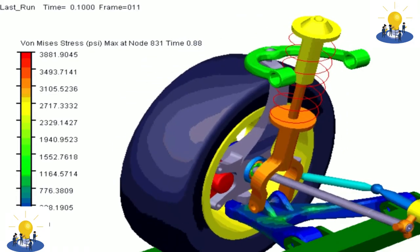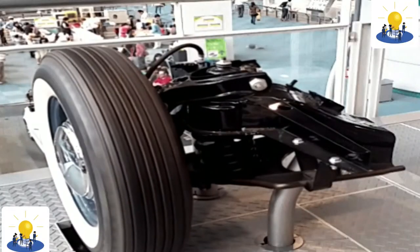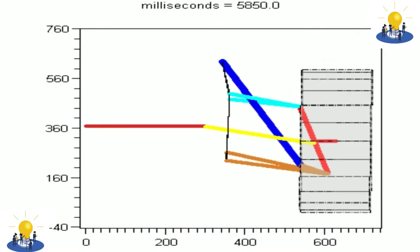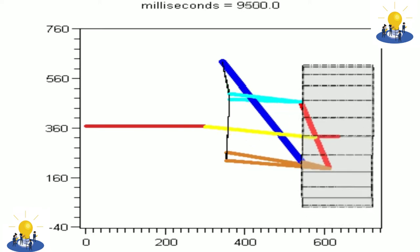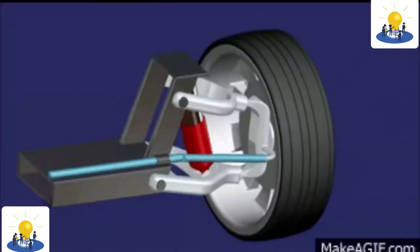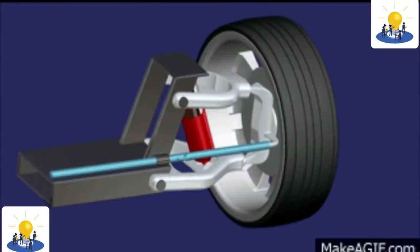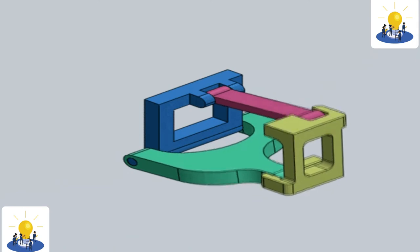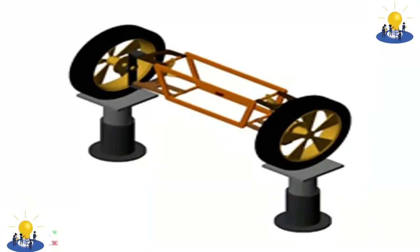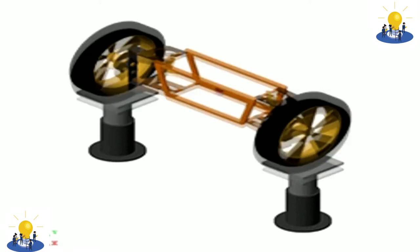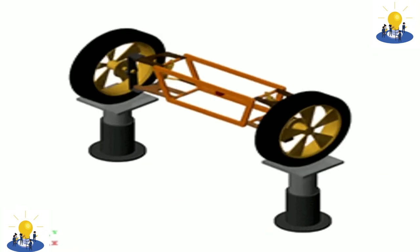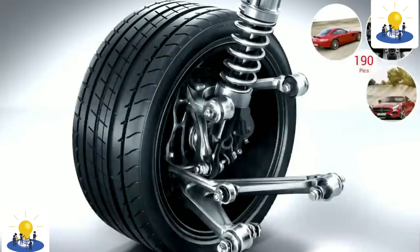In many racing cars, the springs and dampers are relocated inside the bodywork. The suspension uses a bell crank to transfer the forces at the knuckle end to the internal spring and damper. This is known as a push rod if bump travel pushes on the rod, and the rod must be joined to the bottom of the upright and angled upward. The opposite arrangement, a pull rod, will pull on the rod during bump travel, attached to the top of the upright angled downward. Locating the spring and damper inboard increases total suspension mass but reduces unsprung mass, and allows the designer to make the suspension more aerodynamic.